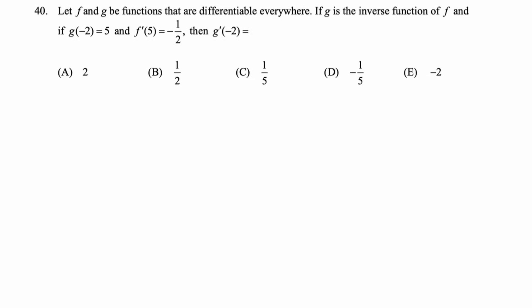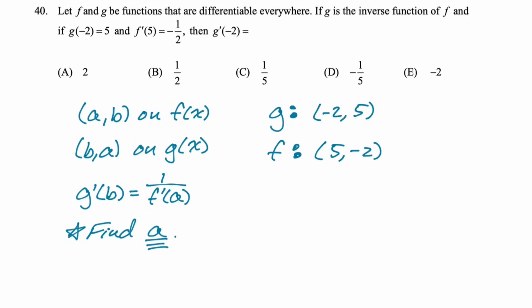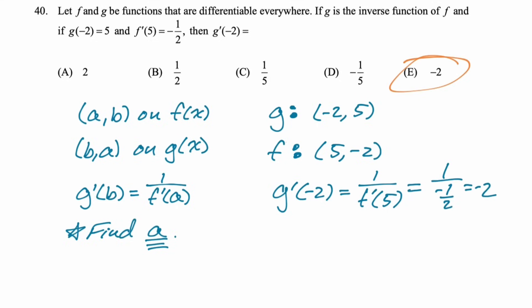Let's do some problems. F and g are functions that are differentiable everywhere. If g is the inverse of f, g of negative two is five, f prime of five is negative one half — find g prime of negative two. What I like to do is write down: b is on f of x, a is on g of x, and g prime of b is one over f prime of a. b is negative two, so the point negative two, five is on g of x, meaning f of x has the point five, negative two. So g prime of negative two is one over f prime of five, which is one over negative one half, so negative two.